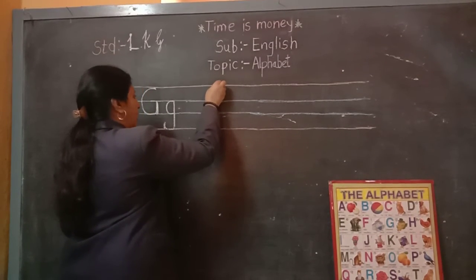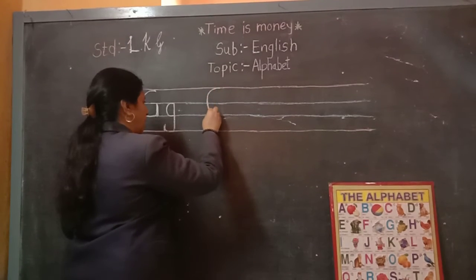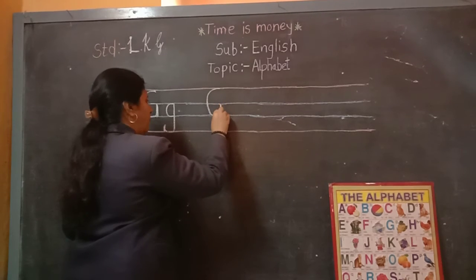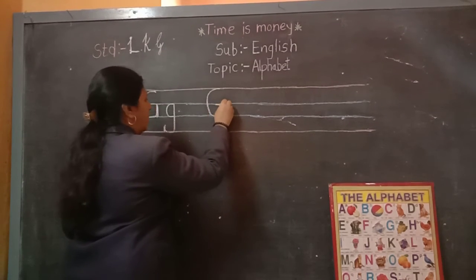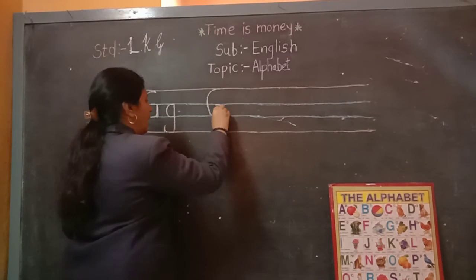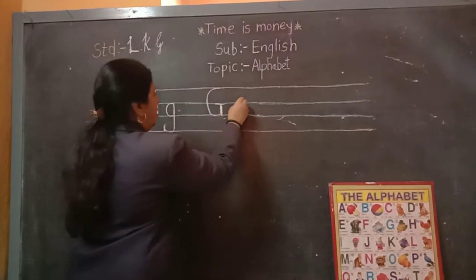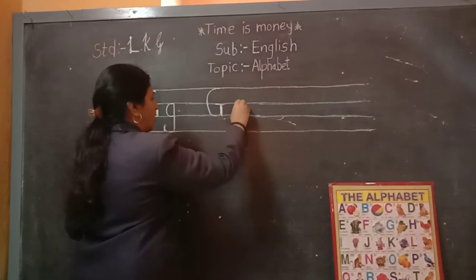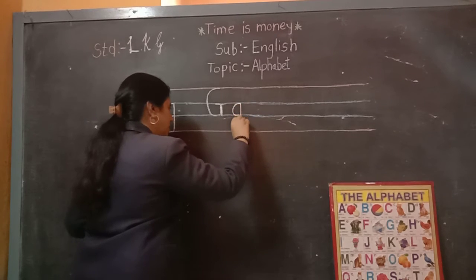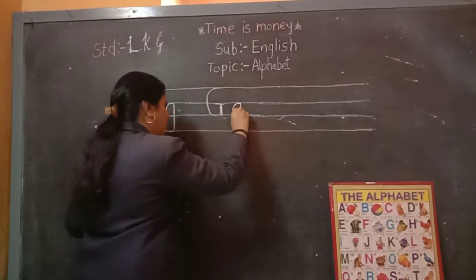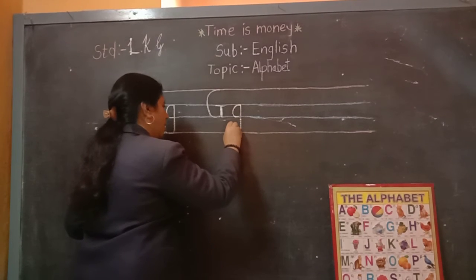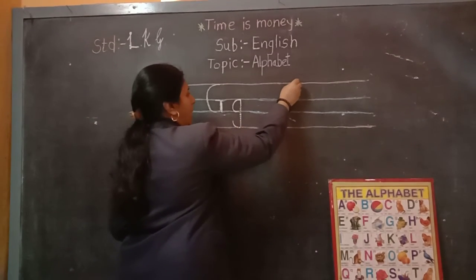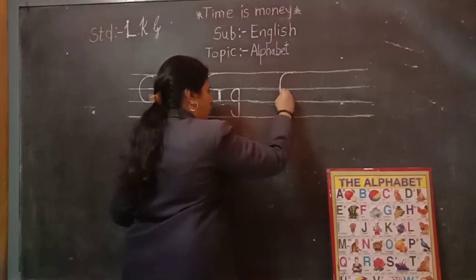Capital G and small g. Capital G and small g. Look here again — from red line to second blue line, a big curve, go up, down, down and slipping line. This is capital G. And small g — circle, from first blue line to second blue line, standing line, go down, go down, and curve. This is small g.